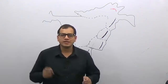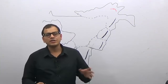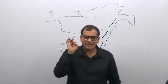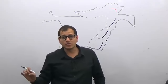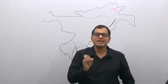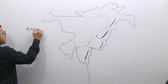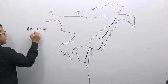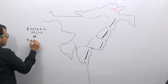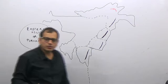Let us now study the next topic - the Eastern Hill Complex or the Eastern Hills, which are the continuation of the Himalayan ranges. These hills are known by different names, and you should know the name of a hill, the state in which it is located, and its features. They are collectively known as Purvanchal.